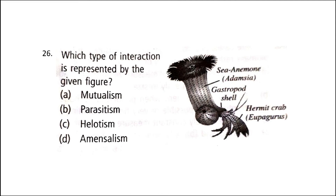Next: which type of interaction is represented by the given figure? A. Mutualism, B. Parasitism, C. Helotism, D. Amensalism. The correct answer is option A: Mutualism. Mutualism is an association between individuals of two species in which both are benefited. The species are called mutualists. The anemone Adamsia is habitually found attached by its lobed pedal disc to the snail's shell used as a portable home by the hermit crab (Eupagurus prideaux). The anemone protects the crab with its nematocysts; in return, the anemone receives food dropped by the crab and is carried to new places. Other examples include mycorrhizae on roots of higher plants and wasps pollinating fig inflorescences.